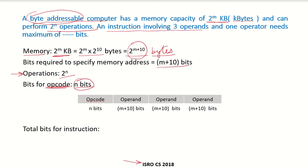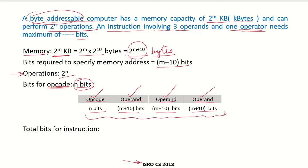An instruction has 3 operands and 1 operator. The operator is the opcode requiring n bits. We assume each operand is a memory address, and each memory address requires m+10 bits. So the total number of bits required for the instruction is n + (m+10) + (m+10) + (m+10), which gives n + 3m + 30 bits.